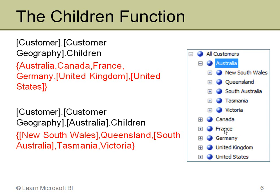That gives me Australia, Canada, France, Germany, and so on — all the countries. If that looks familiar, it's similar to what we did with the members function; there are often multiple ways to get the same results. In the next example, I'm still in the customer geography hierarchy but now I specify Australia, so I want the children of Australia.